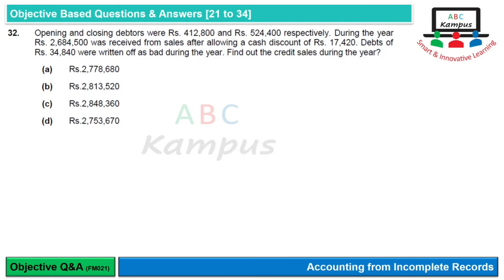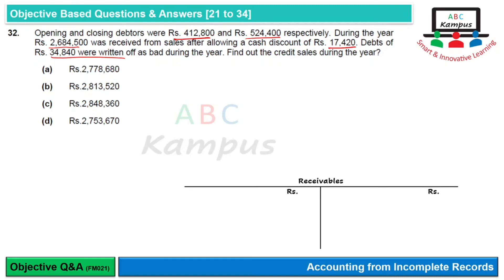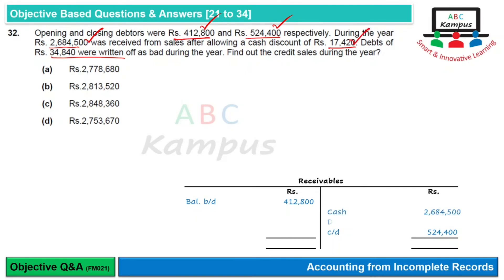Question 32: Opening and closing debtors are Rs. 412,800 and Rs. 524,400 respectively. During the year Rs. 2,684,500 was received from sales, after allowing cash discount of Rs. 17,420. Debts of Rs. 34,840 were written off. Find credit sales during the year। Receivable का T-account बनाते हैं: opening balance debit side पर, closing balance credit side पर, cash received credit side पर, discount allowed credit side पर, bad debts credit side पर — as a balancing figure sales की value आएगी। Correct answer is C।